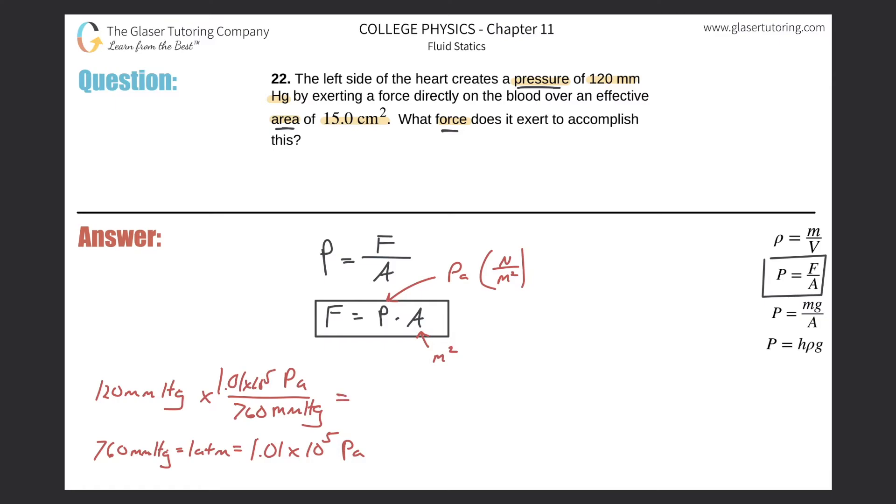And we can now just simply do our division. So 120 times 1.01 times 10 to the 5th divided by 760. We get a value of about 16,000. I'm going to use the exact number when I do my calculations, but it is approximately 16,000.